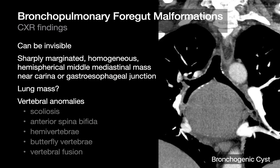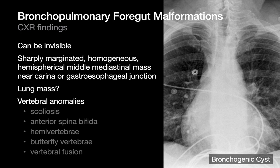Multinodular goiters are the most common thyroid mass, and with large ones we see narrowing or displacement of the trachea at or near the thoracic inlet. On CT imaging you may see a multilobular mass with nodules, cysts, or combinations thereof; dystrophic calcifications are not uncommon. Thyroiditis — usually Graves or Hashimoto's — results in an enlarged thyroid that's much more uniform in attenuation than a goiter, and depending on size there may be some crossing of the thoracic inlet into the mediastinum.